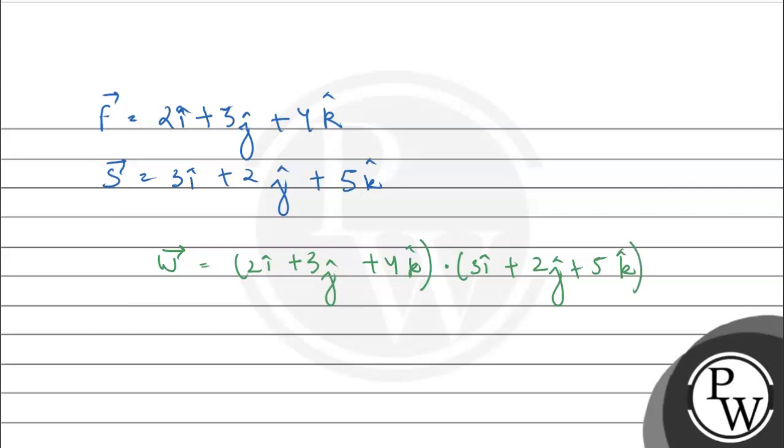Now, dot product में, i और i का dot product is 1, लेकिन i का dot product j से is 0 और i का dot product k से is 0. Same, j का dot product with k is also 0.